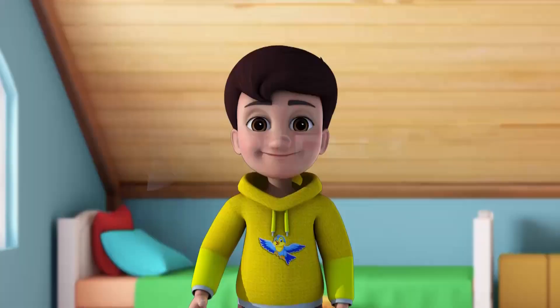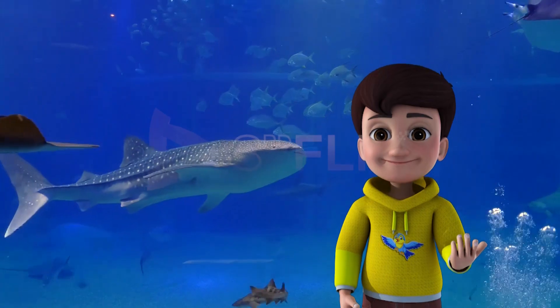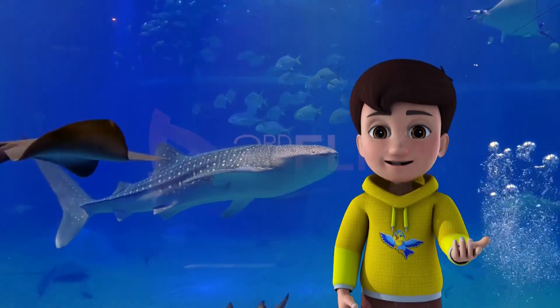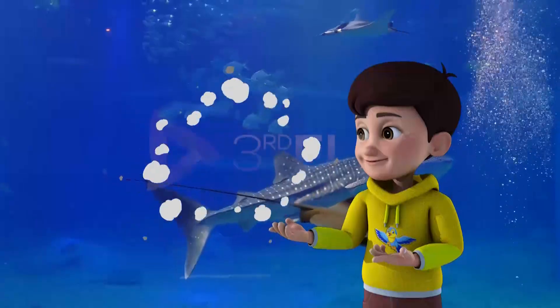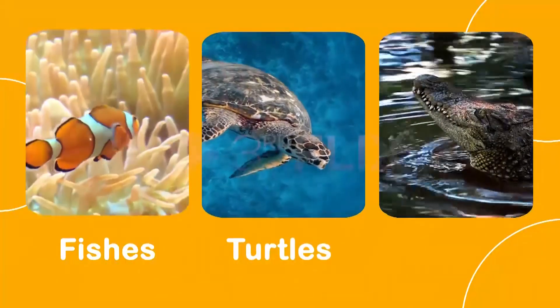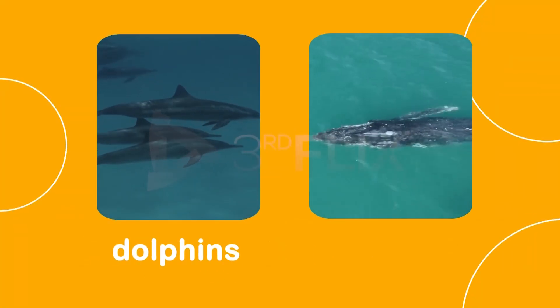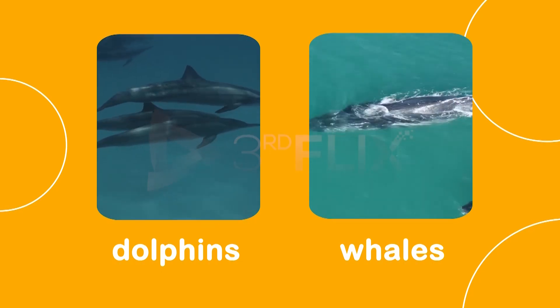Let us know about animals living in water. Animals that live in water are called aquatic animals. Animals like fish, turtles, crocodiles, dolphins and whales live in water. Fins help them to swim in the water.